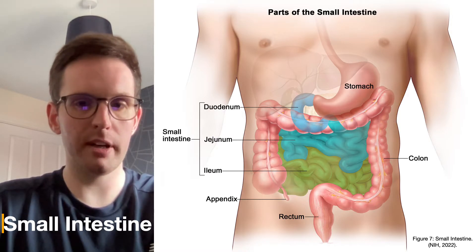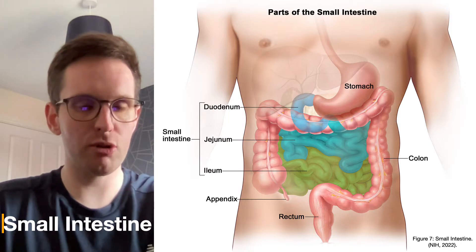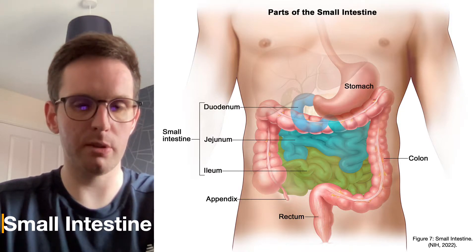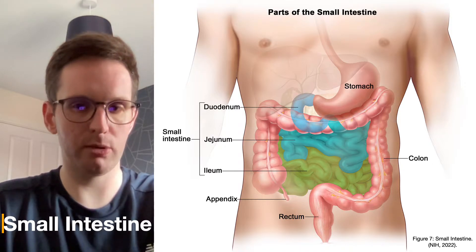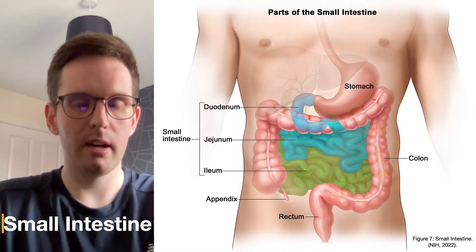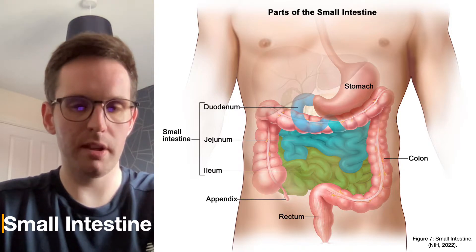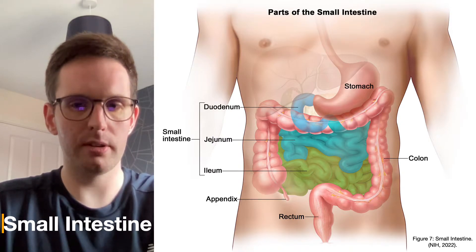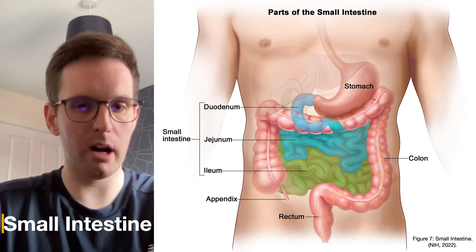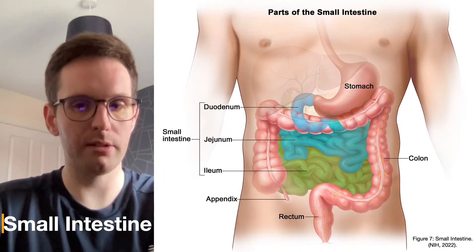The duodenum completes chemical digestion by neutralising the acidic contents received from the stomach, ensuring that secreted enzymes such as lipase, peptidase, sucrase, maltase, and lactase can function within their optimal conditions. This is achieved through the secretion of mucus containing alkaline bicarbonate from the pancreas to neutralise the acidic environment.